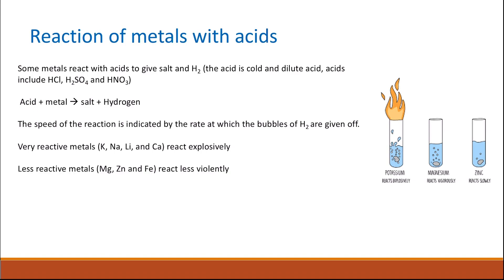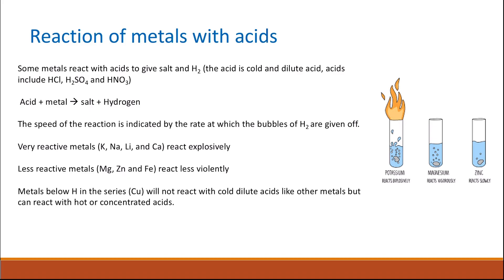Less reactive metals, like magnesium, zinc, and iron, will react less violently. Metals which are below hydrogen in the reactivity series will not react with cold dilute acids, but they can react with hot or concentrated acid. An example is copper, which can react with hot acids to give salt and hydrogen.